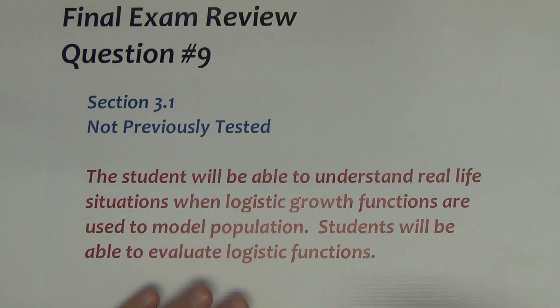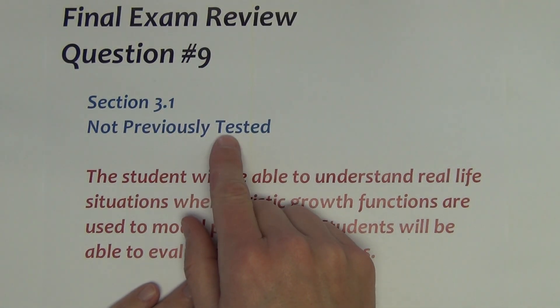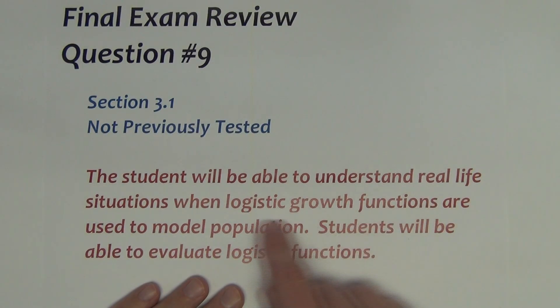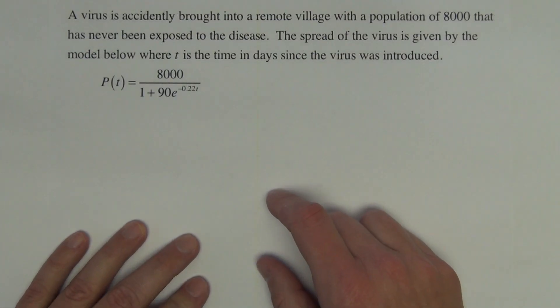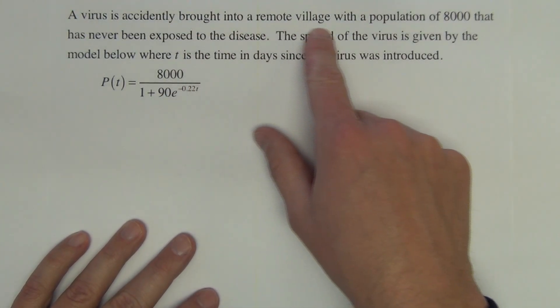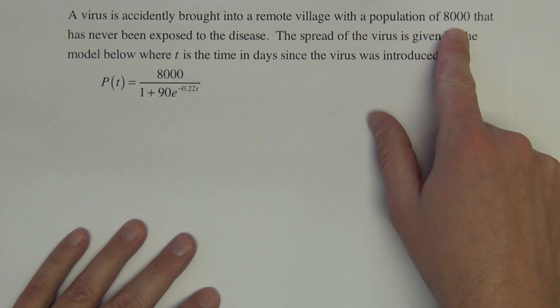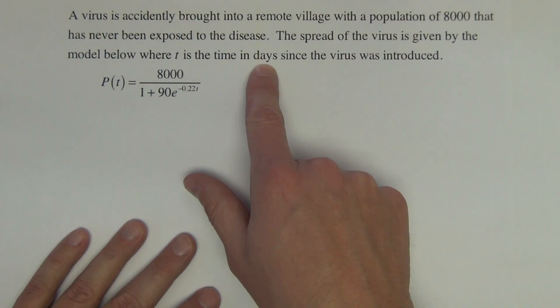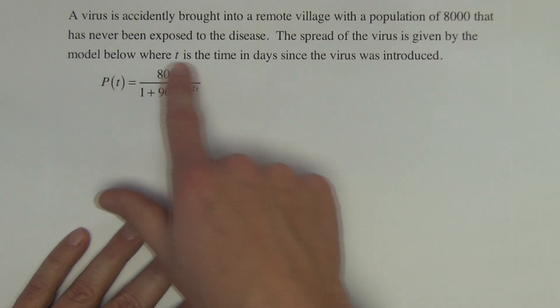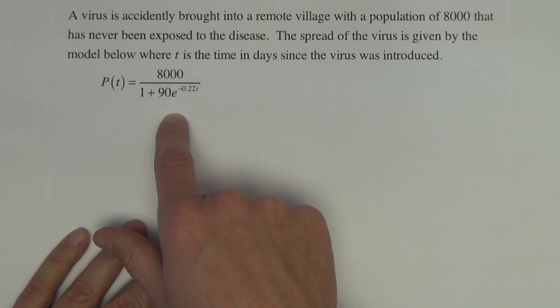Question 9 on the final exam comes from section 3.1. It has not previously been tested. A student will be able to understand real life situations when logistic growth functions are used to model populations. Students will be able to evaluate logistic functions. That is kind of the big part of this is evaluating logistic functions correctly. This problem says, A virus is accidentally brought into a remote village with a population of 8,000 that has never been exposed to the disease. The spread of the virus is given by the model below where t is the time in days since the virus was introduced. And here is the function that models the spread of the virus. It is a logistic growth function.